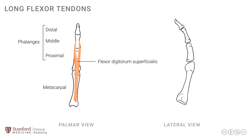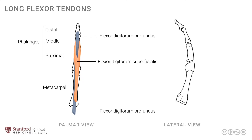Each of these fingers has another tendon from the flexor digitorum profundus. The FDP tendon goes deep to the FDS and continues on its way up to the distal phalanx, doing so by going in between the two slips of the FDS. It crosses through up to the distal phalanx. This relationship between the FDS and FDP is a very important one.